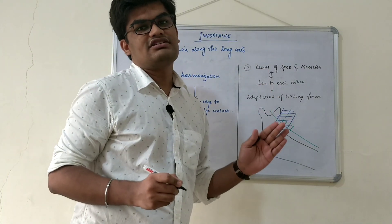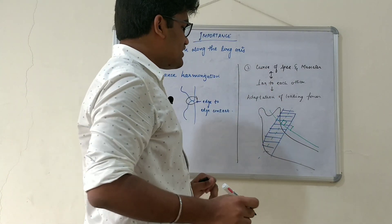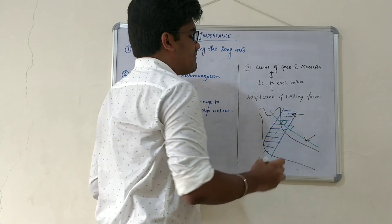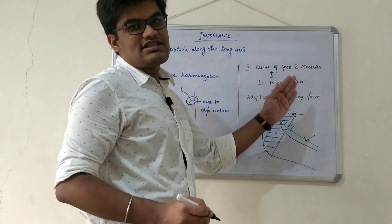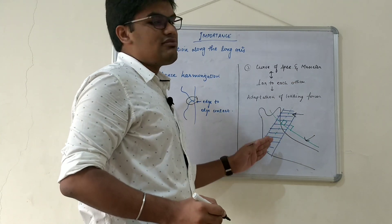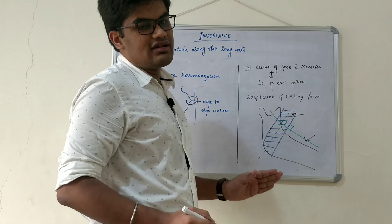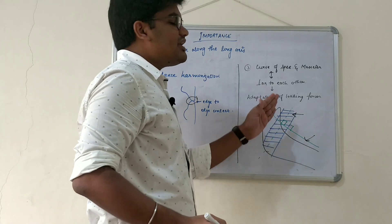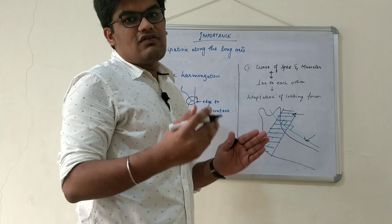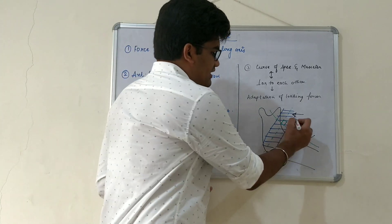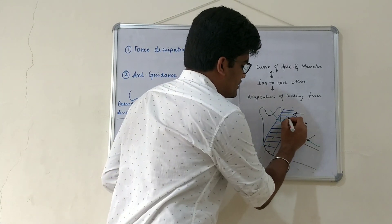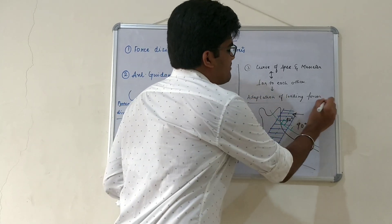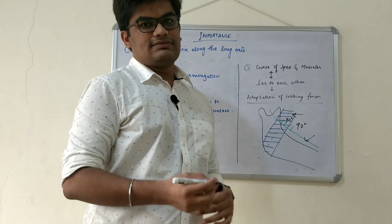The third point is the relationship with the masseter muscle. As we can see in the figure, the curve of Spee and the masseter muscle — which originates from the zygomatic arch and inserts over the ramus and angle of the mandible — are perpendicular to each other. If the curve of Spee is incorporated properly, it forms an angle of 90 degrees with the masseter muscle, and together this helps in the adaptation of loading forces.